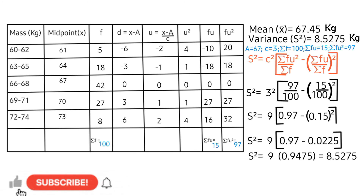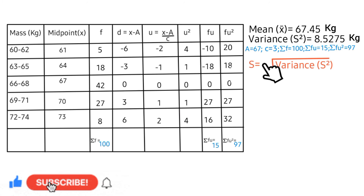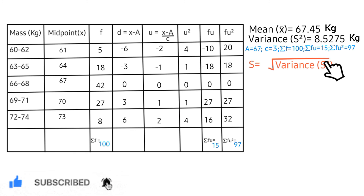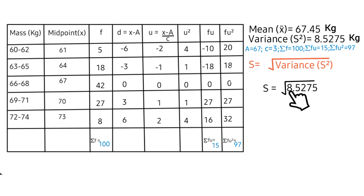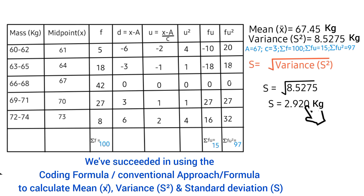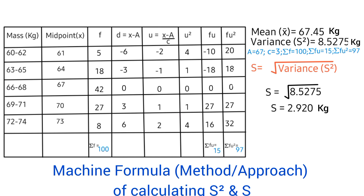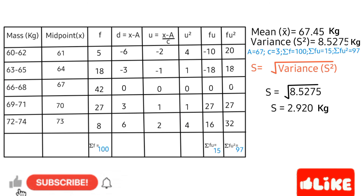Now let's calculate the standard deviation, represented as s, which is the square root of the variance. The square root of 8.5275 gives 2.920. We have successfully used the coding formula — also called the conventional approach — to calculate the mean, variance, and standard deviation. If this video was helpful, please like, leave a comment, share, and subscribe to the channel. Thanks for watching!